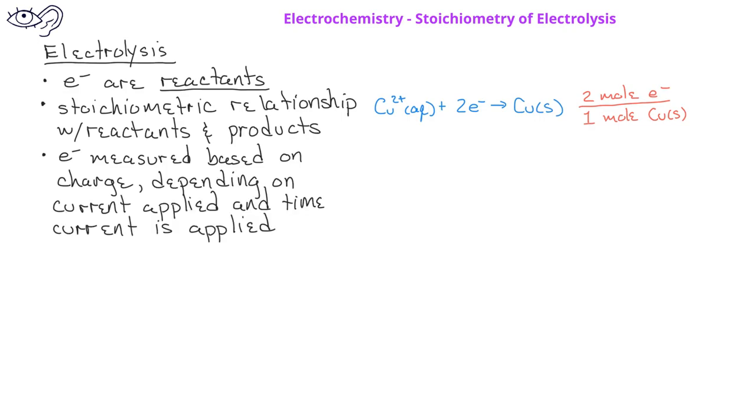This means that electrolysis is essentially a stoichiometry problem that allows us to move from the time to the amount of metal deposited, or vice versa. For example, if we start with time, we can use the current as a conversion factor to figure out the charge involved.